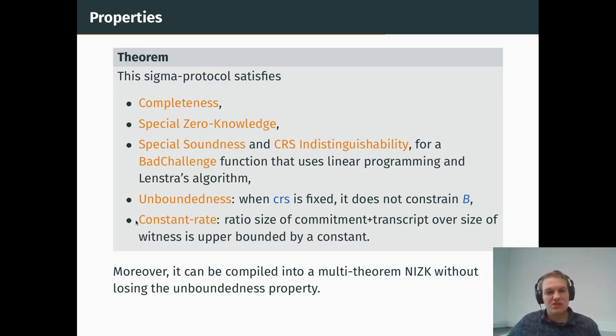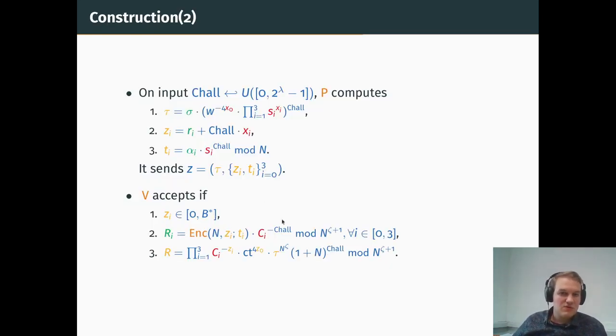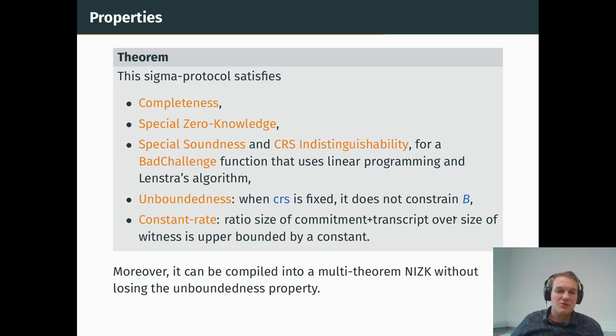Then we also achieve constant rate, because, well, we can compute what it is that we have in a full transcript. And we will see that because of the way we choose ζ to be the smallest integer that is close to the x_i's and x and everything, we get the constant rate. But most importantly, we want a non-interactive range proof. So to do so, we want to compile all of that into a multi-theorem non-interactive zero-knowledge proof. But we don't want to lose the unboundedness property, nor the constant rate property. And we can do so using different OR tricks and other properties like that.